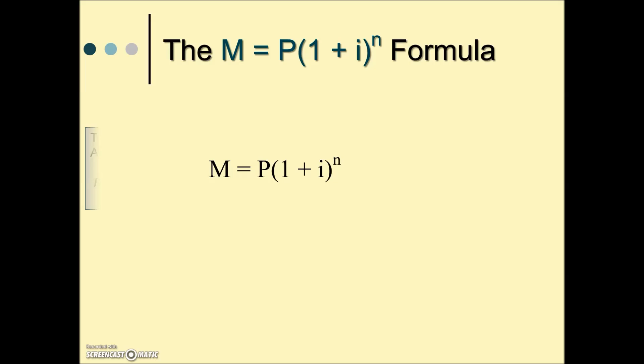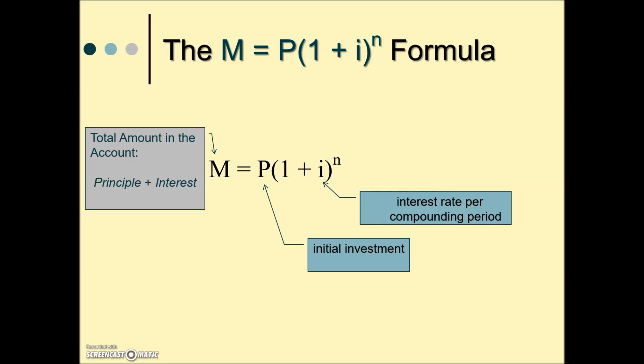So let's put it together with our compound interest formula. One more time, let's go over the components of this formula. M is the total amount in the account, the principal plus the interest. P is the initial investment or the principal. i is that interest rate per compounding period that we just calculated, and n is the total number of compounding periods that we also calculated from those last examples.